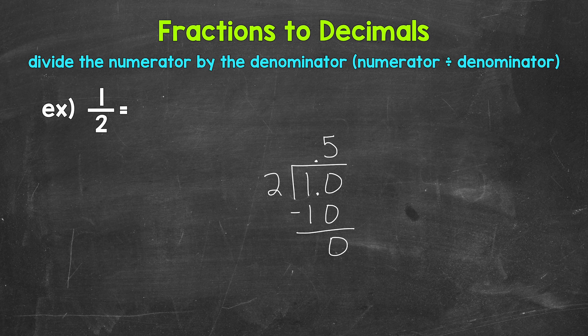One half equals 5 tenths. So let's write this up here. One half equals 0.5. So again, one half equals 5 tenths.